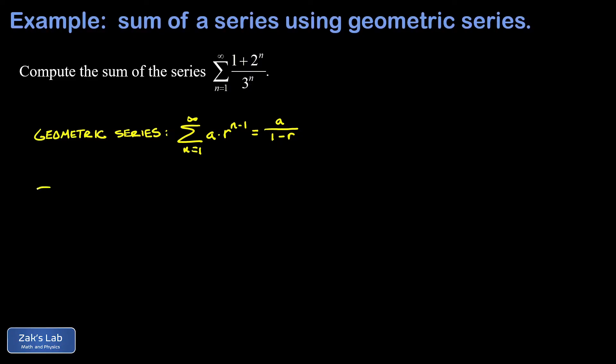When I consider the series given to us in this problem I immediately think let's break it up into two pieces and each of those pieces looks like a geometric series. We're dividing 1 plus 2 to the n by 3 to the n, but we could also write that as 1 over 3 to the n plus 2 to the n over 3 to the n. Now I can write this as two separate series.